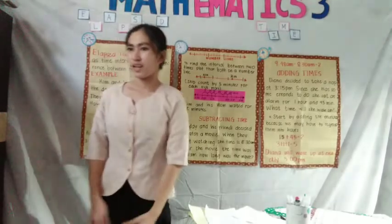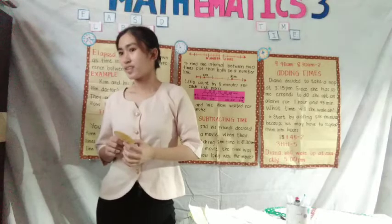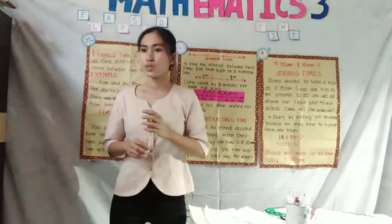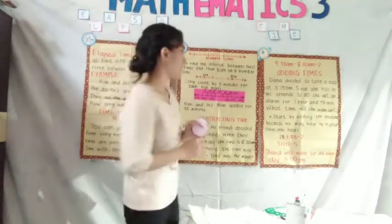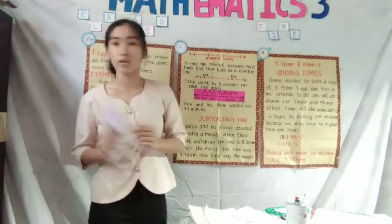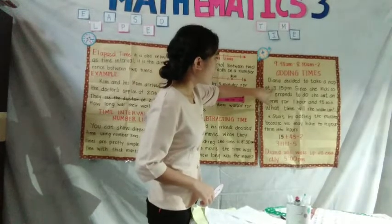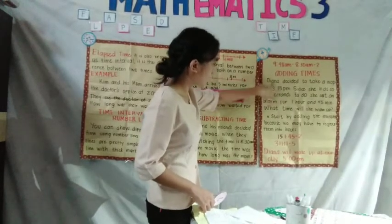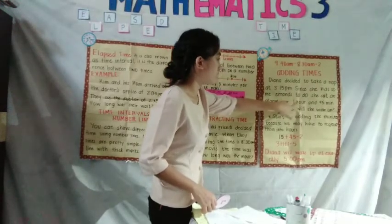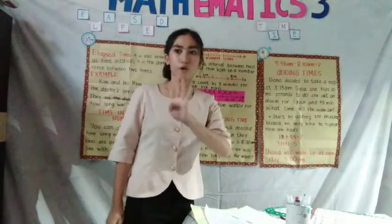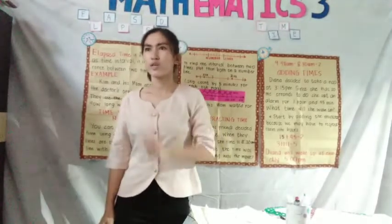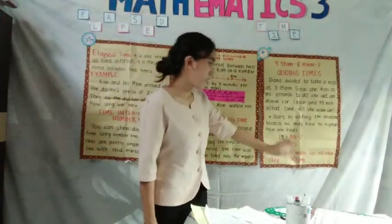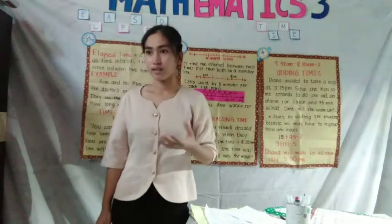So 15 plus 45, any volunteer who could add that? John? All right, 60. But what did they tell you last time? 60 minutes is equivalent to 1 hour, right? So we have to set it aside first, the 1 hour. Remember, 1 hour. So we have to add the hours. So from 3:15 PM, we have to get this 3 and 1 from the second alarm. So 3 plus 1 is 4, plus 1, 5. Where did we get the 1 again? Right, from 60 minutes earlier. So 3 plus 1 plus 1 is 5. So Diana will wake up at exactly 5 PM.